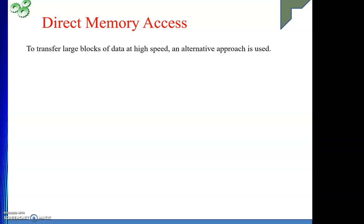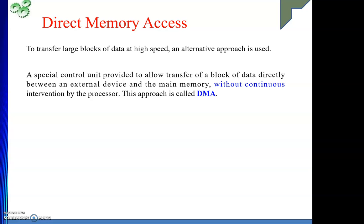The third method is direct memory access. In DMA, there is no context switching overhead. DMA is used to transfer large blocks of data at high speed. A special control unit is provided to allow transfer of a block of data directly between an external peripheral device and the main memory, in contiguous memory allocation, without continuous intervention by the processor.